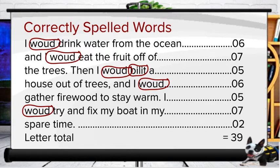For correctly spelled words, we count only the words in the writing sample that are spelled correctly. Words are considered separately and not within the context of a sentence. The rule to follow is: if in isolation the word represents a correctly spelled term in English, then the word is included in the tally. Assessing the number of correctly spelled words has the advantage of being relatively quick and also examines spelling accuracy, allowing us to evaluate a student's mastery of written language to some degree. This writing sample contains 39 correctly spelled words.